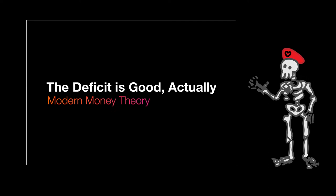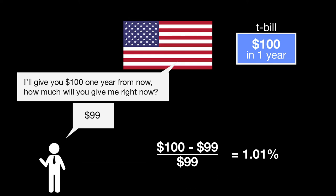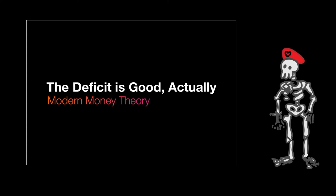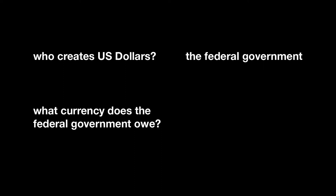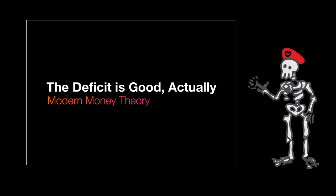All of the money that the United States government owes is in US dollars — that's what it auctioned off, a promise to pay $100 at some point in the future. It doesn't owe any euros or Canadian pesos or anything like that. Who creates US dollars? The federal government. And what is all of our debt owed in? US dollars. So could there ever be a time in which a payment for government debt comes due and the US federal government can't come up with the cash? No.